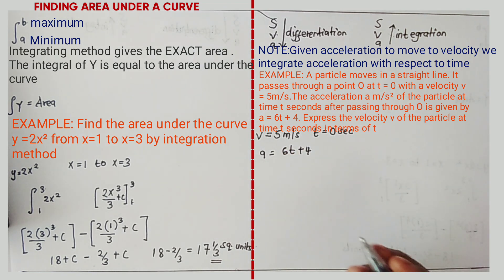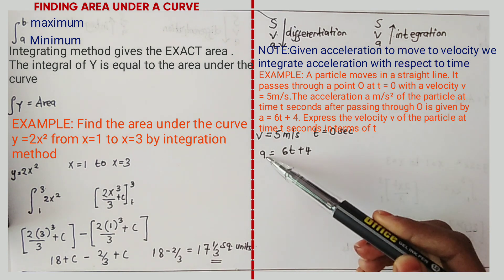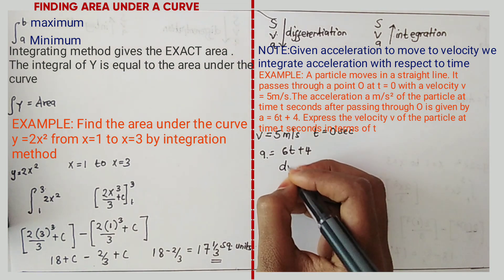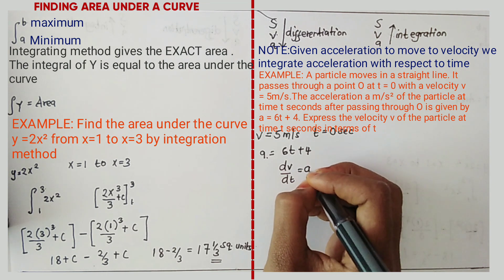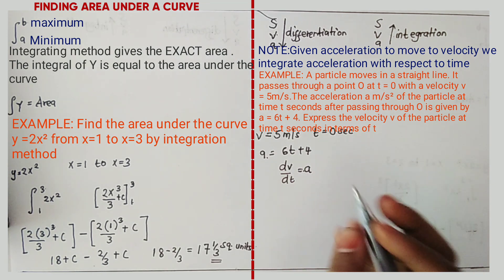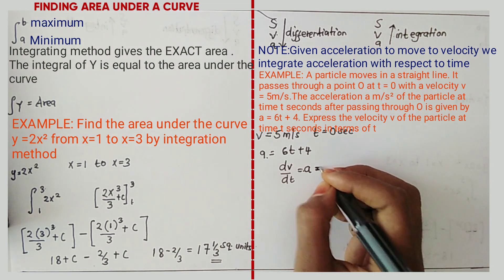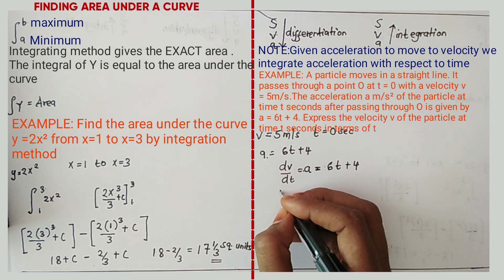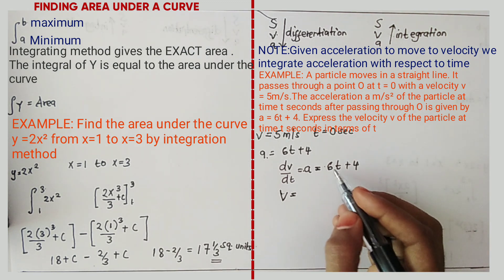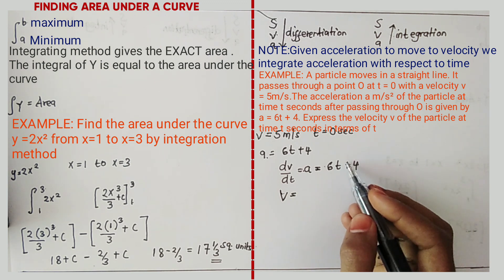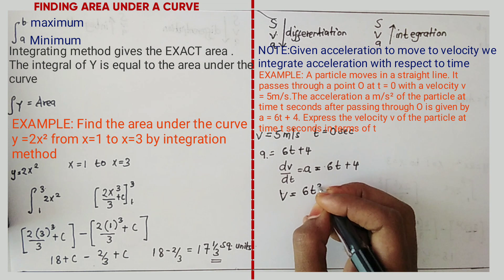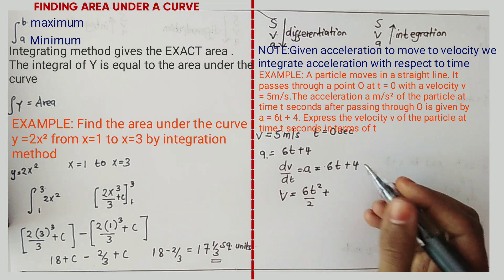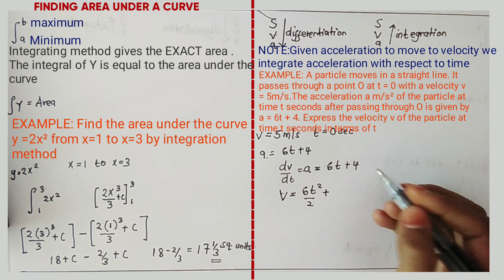We have velocity = 5 m/s at t = 0, and acceleration A = 6t + 4. Since A = dV/dt, to find velocity we integrate acceleration with respect to time. Integrating 6t: the power of t is 1, add 1 to get 2, giving 6t² divided by 2. Integrating 4t⁰ gives 4t. So velocity = 3t² + 4t + C.